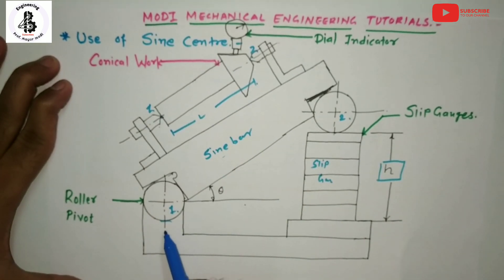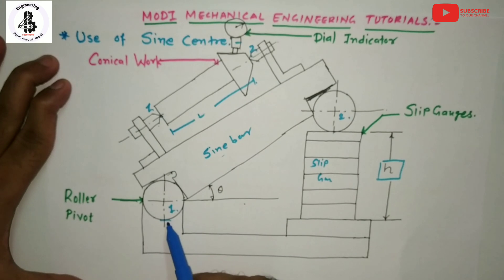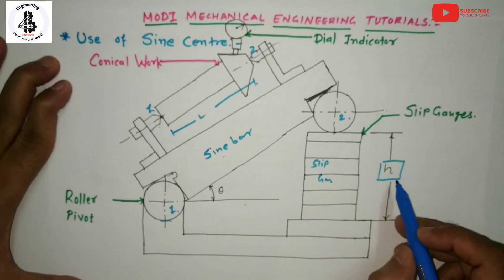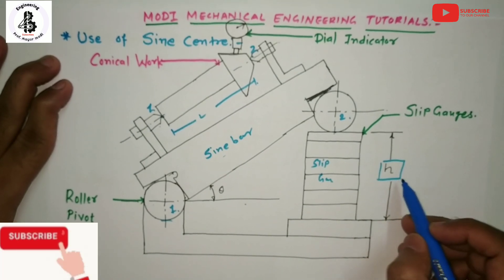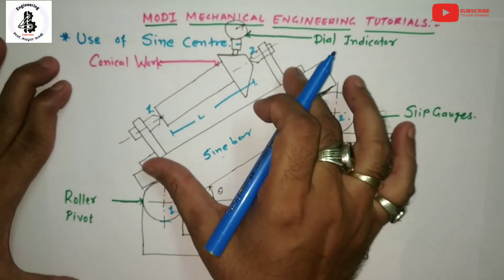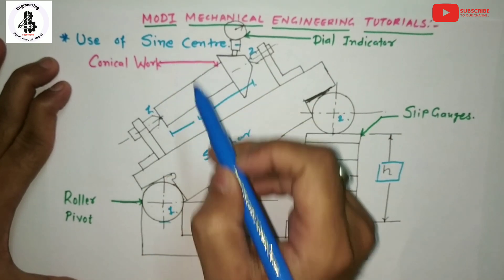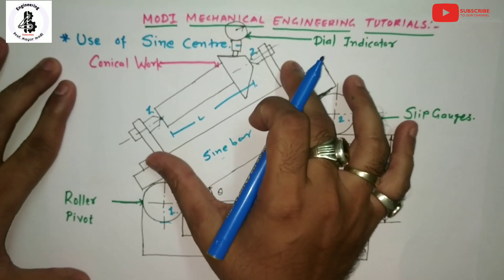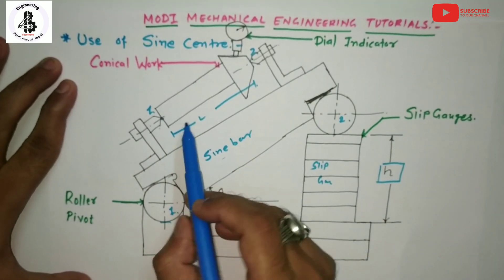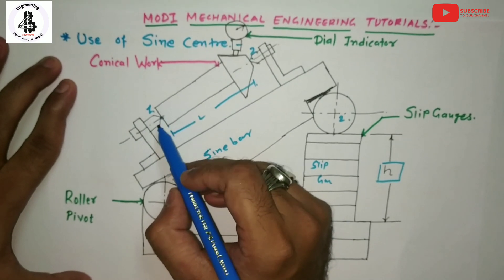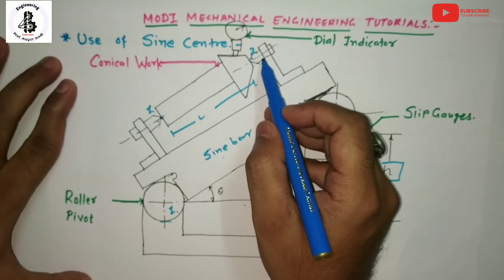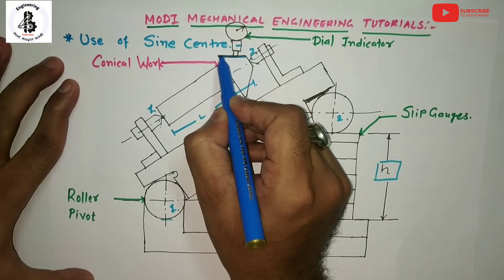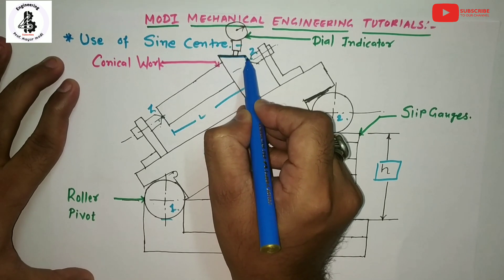The sine bar is rested on the surface plate — one roller sits on the surface plate and the other roller is set onto a stack of slip gauges of height h. With the application of the sine center on the sine bar, the sine center properly holds the conical-shaped workpiece between the two centers. You can see one surface of this conical shape which is to be measured.